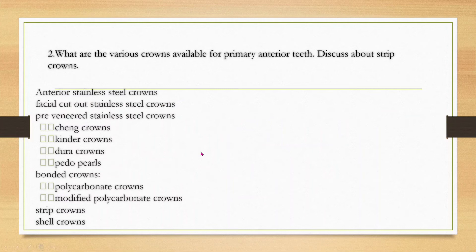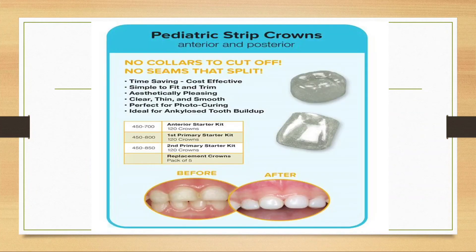Various crowns available for primary anterior teeth include: anterior stainless steel crown, facial-cut stainless steel crown, preveneer bonded crown, strip crown, and shell crowns. Pediatric strip crowns have no colors to cut off, no seams that split, are very time-saving, cost-effective, simple to fit and trim, and aesthetically pleasing — clear, thin, and smooth.